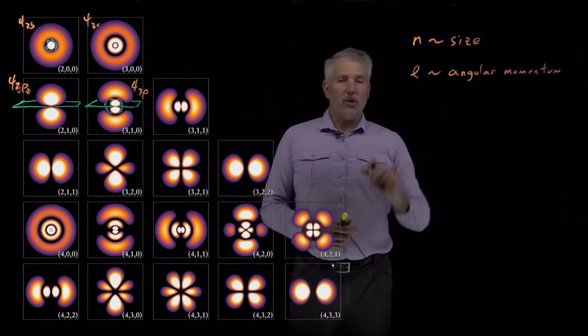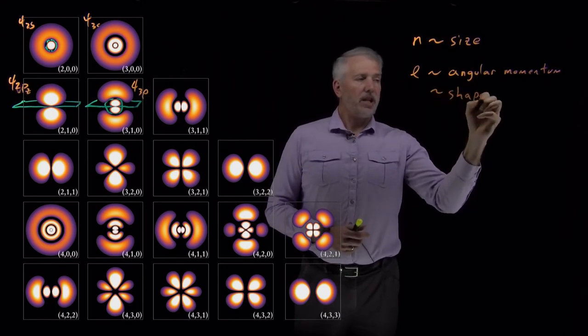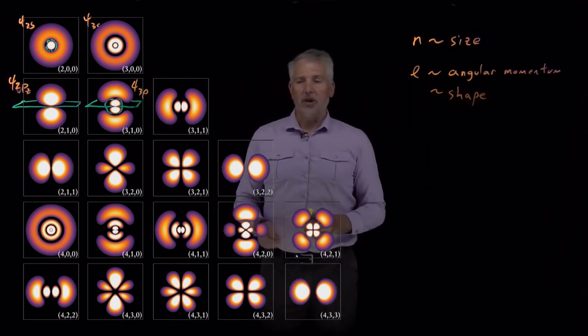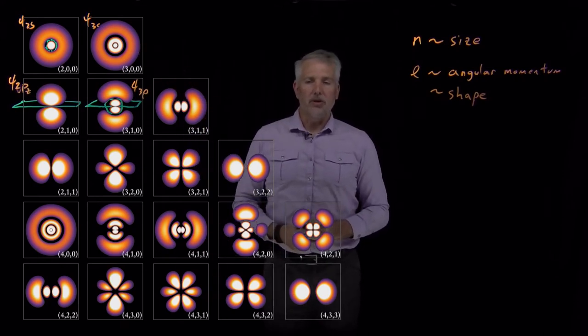So what angular momentum practically means is that that has an effect on the shape of the wave function. The l value tells us a lot about the shape, largely whether it's an s orbital or a p orbital or a d orbital or an f orbital and so on.